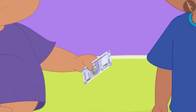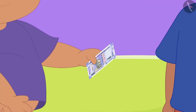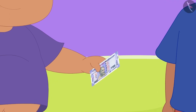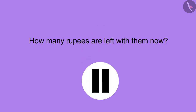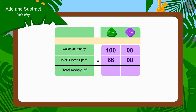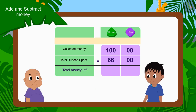Raju and Bablu had 100 rupees in the beginning. So, can you tell how many rupees they have left now? If you want, you can pause the video and find the answer. Wow, kids, you have found the right answer! Raju and Bablu now have 34 rupees left. Children, we have used subtraction to find these answers.